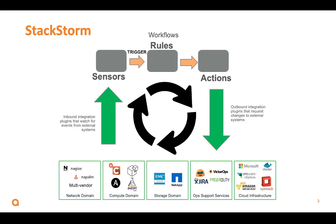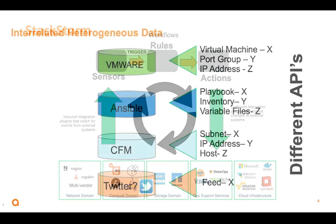For example, vSphere could spin up a port group. I could hear about it, kick off a trigger to a rule that says 'new port group,' and that kicks off an action — a Python script that configures a new VLAN on the network. It's a cycle of automation by listening and reacting to the world around it.